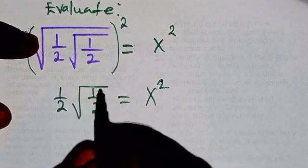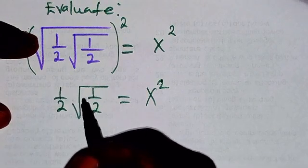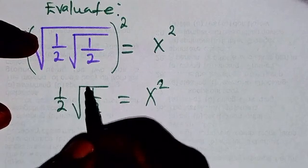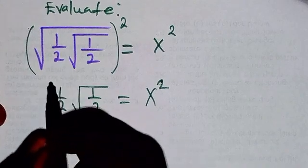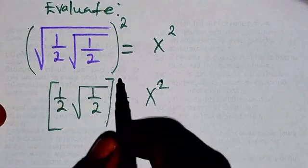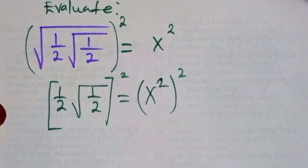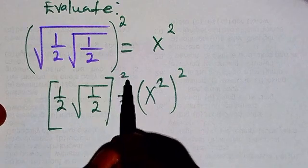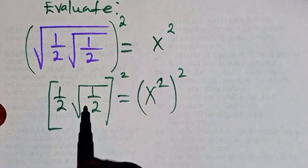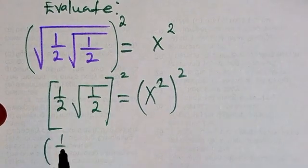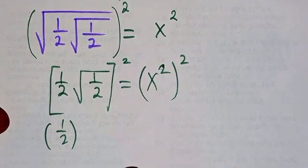The next thing we are going to do is we are still going to square because we want to get rid of this radical here. So I'm still going to square both sides again. Squaring both sides again, you can see that this will be one over two to the power of two because of this power two here.